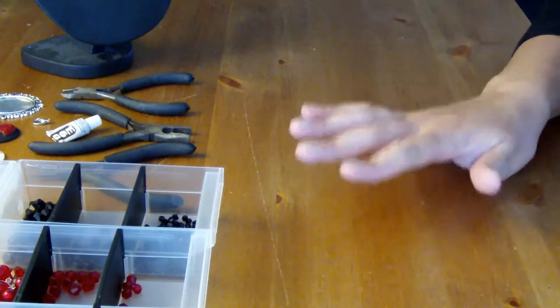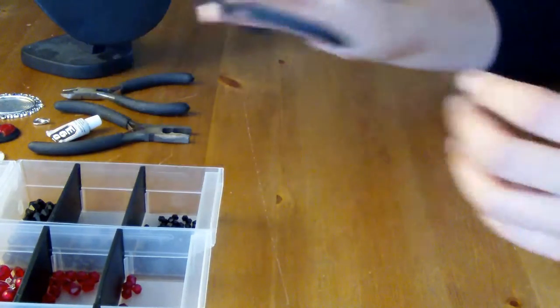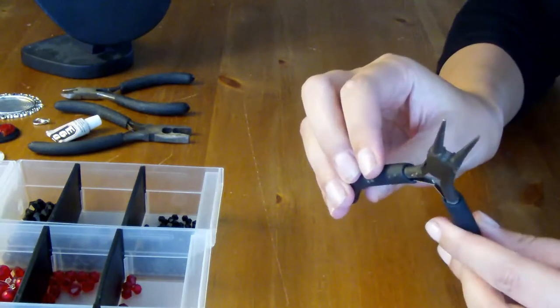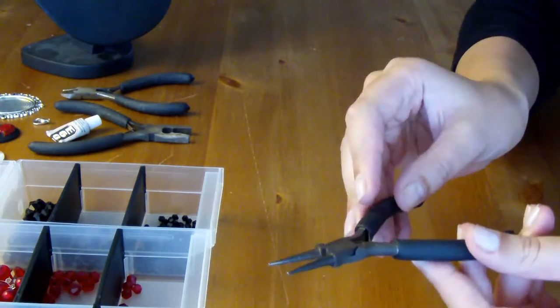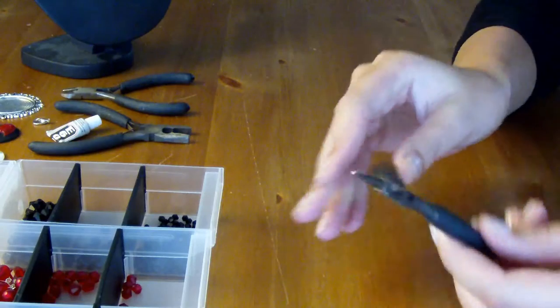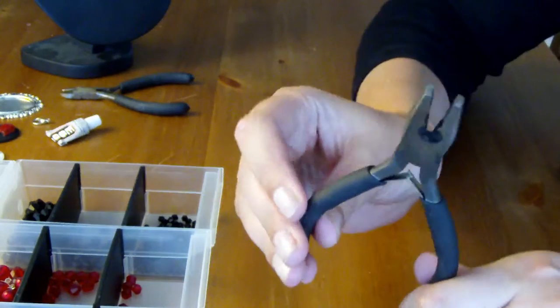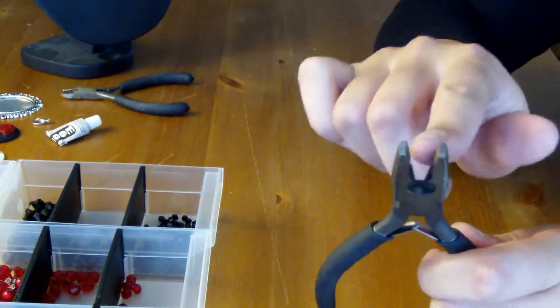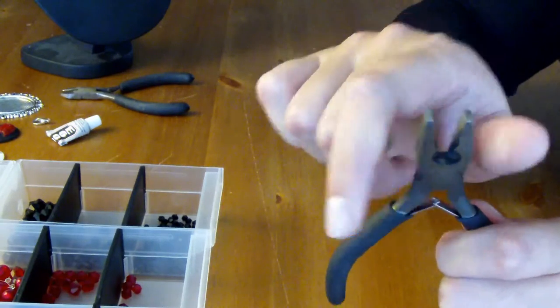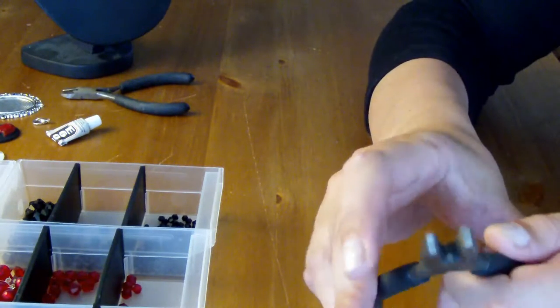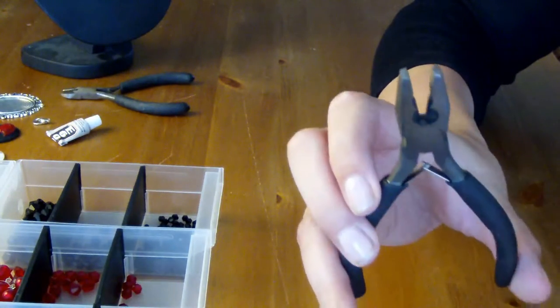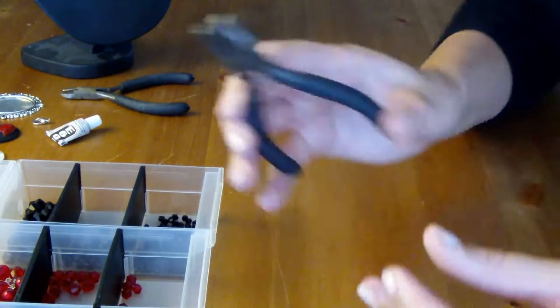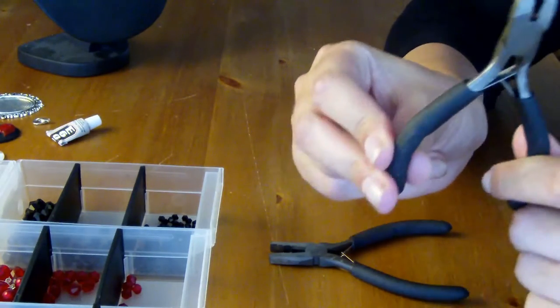So first things first, the materials you will be needing are pliers. So these are round-nosed pliers and you can do about anything with rings with it, you can force them open. The second type of pliers are these ones and they are flat but they have grip on the inside and so you have to be careful that you do not harm any of your metal things with these. Then the third tool are wire cutters.